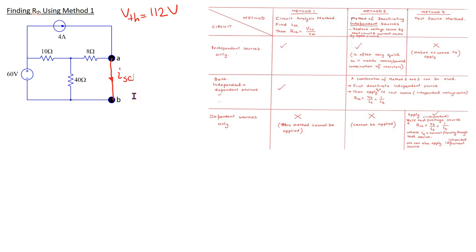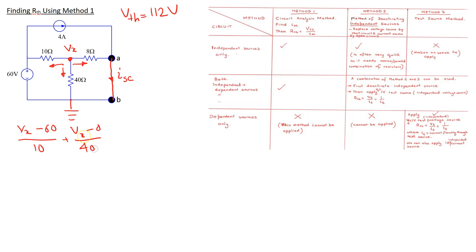To find the short circuit current we use the node voltage method. We ground one terminal and have one essential node of interest, assuming branch currents flowing away from the node. Applying Kirchhoff's current law gives (Vx minus 60) over 10, plus Vx over 40. Since A and B are now short circuited, the voltage at A equals voltage at B which is grounded, so this branch current is Vx over 8. Solving gives Vx equals 24 volts.